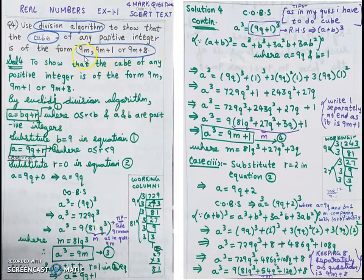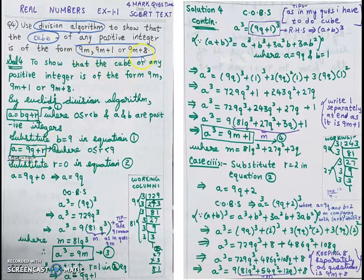Underline the keywords: division algorithm, cube, 9m, 9m + 1, 9m + 8. Since 9 is common in all three forms, comparing with BQ + R, B = 9. Substitute B = 9 in Euclid's algorithm: A = 9Q + R, where 0 ≤ R < 9. The three cases have remainders 0, 1, and 8 corresponding to 0³ = 0, 1³ = 1, and 2³ = 8.